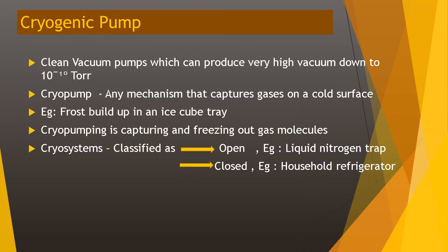The next high vacuum pump is the cryogenic pump. It is a clean vacuum pump which can produce very high vacuum down to 10⁻¹⁰ Torr. The cryopump is any mechanism that captures gases on a cold surface — for example, the frost build-up in an ice cube tray. The cryopump works by capturing and trapping gas molecules.